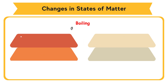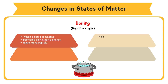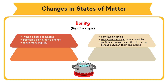Boiling. When a liquid is heated, the particles gain kinetic energy and move more rapidly. Continued heating will supply more energy to the particles until the particles can overcome the attractive forces between them and escape. At this point, the liquid starts to become a gas. The temperature at which a liquid changes to a gas is called the boiling point.